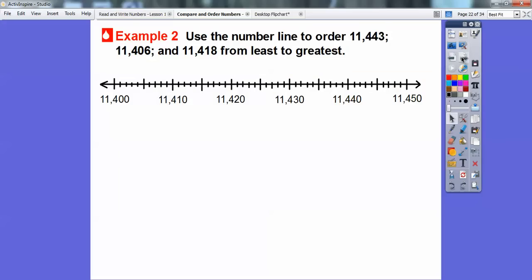Here's another one. We're going to use a number line to order 11,443, 11,406, and 11,418 from least to greatest. Let's place this number first: 11,443. Here's 11,400, so it looks like these little tick marks are going by ones. There's 11,440, 441, 442, 443, so I'll put a dot right there. Now let's do 11,406. Here's 11,400, 401, 402, right there is 11,406. And then finally 11,418.